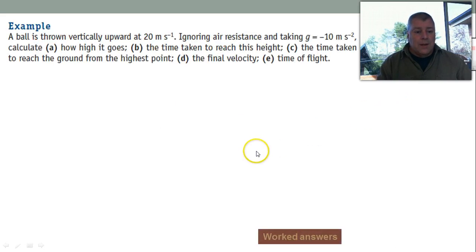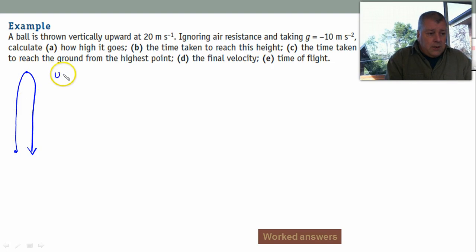So let's do a couple of examples. Let's fire up the pen. Here we have a ball thrown vertically upward at 20 meters per second. Ignore air resistance and use 9.8. How high does it go? Common question. Time it takes to reach the height, time taken to reach the ground from the highest point. B and C should be equal, shouldn't they? And the final velocity and the time of flight. Get a question like this, read it once to visualize, make sure you understand what's happening. Then read it again to extract the information. So we're starting here, we're reaching here.